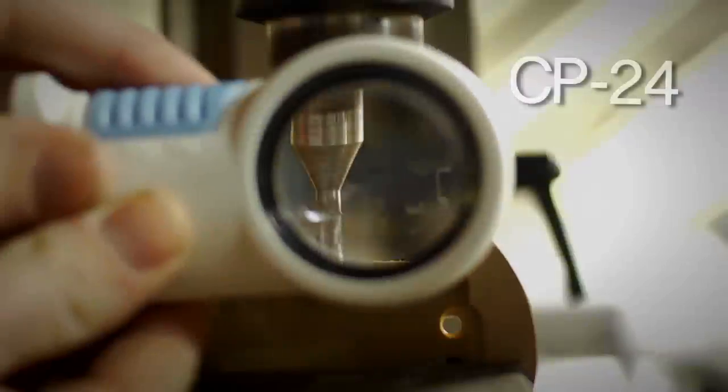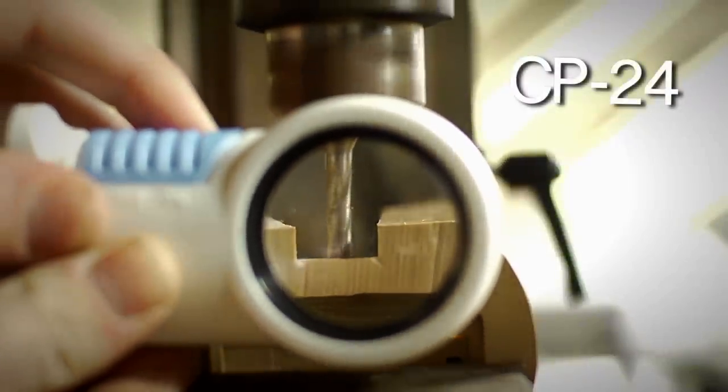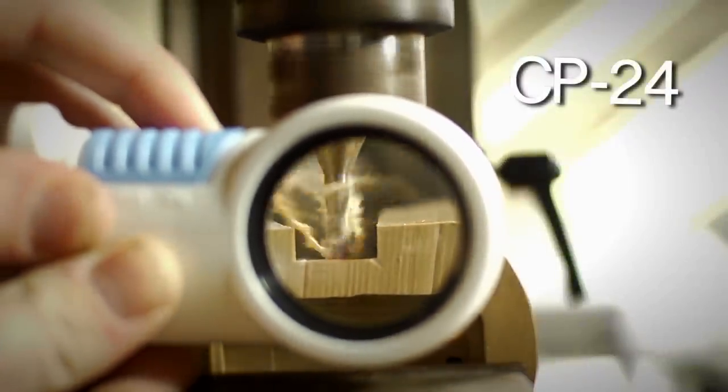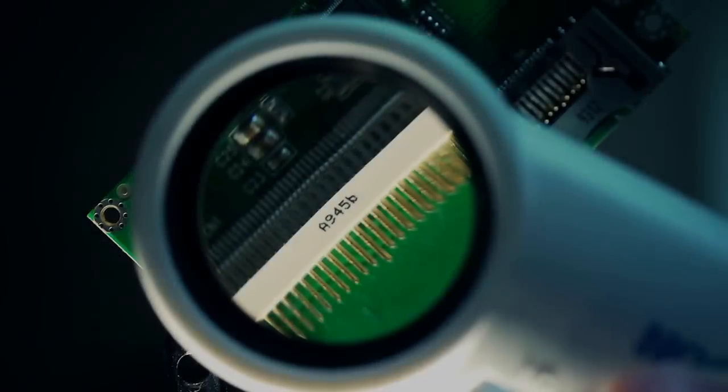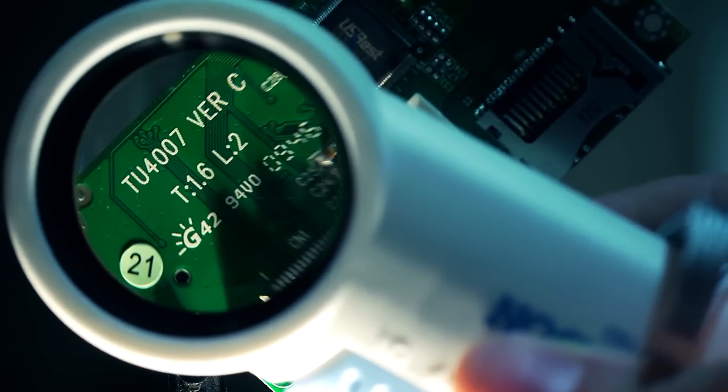The CP24 is seven power and slightly more powerful than the CP16. This device serves as an excellent inspection device but can also help people out who have vision disorders such as macular degeneration. With this device you can read small fonts and inspect anything.